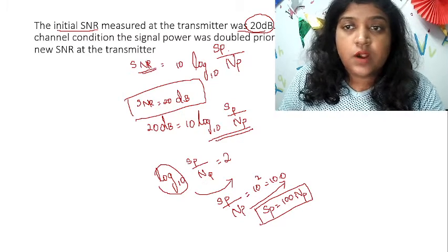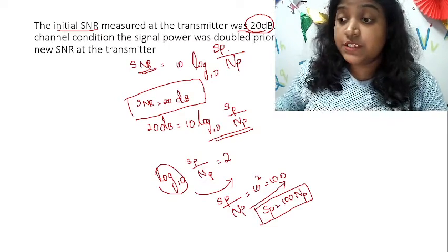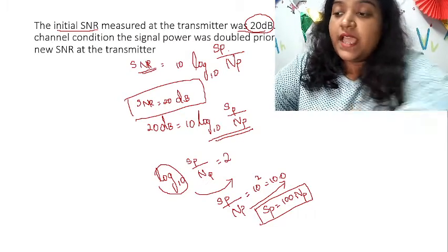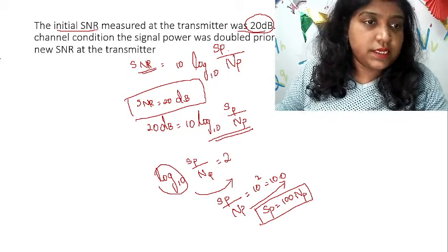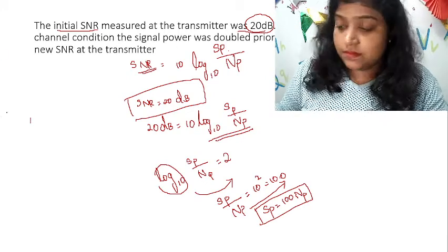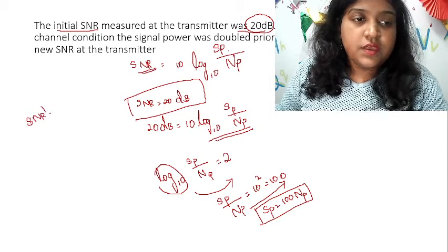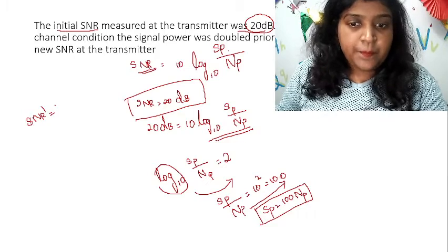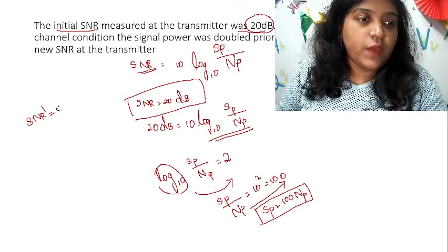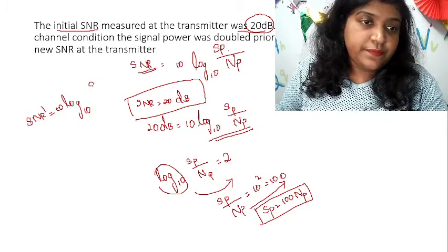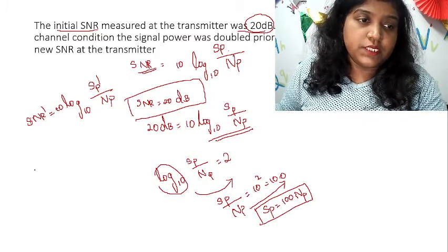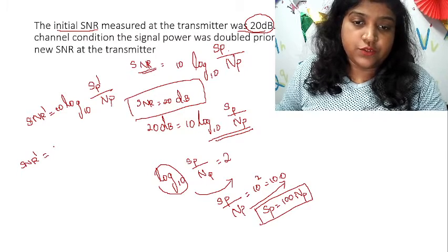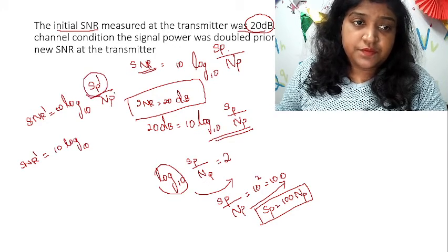What is the new SNR transmitted? I am going to take the new SNR as SNR dash. SNR dash is equal to 10 log base 10 of SP dash divided by NP. So in this condition, the new SNR dash is equal to 10 log base 10 of SP dash.